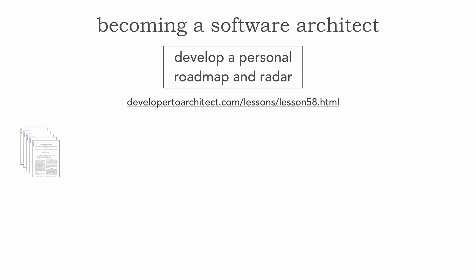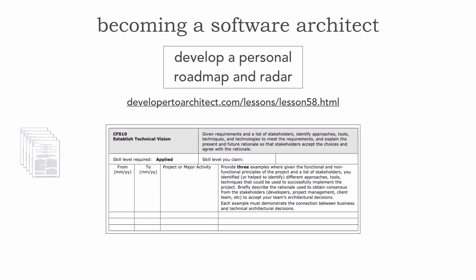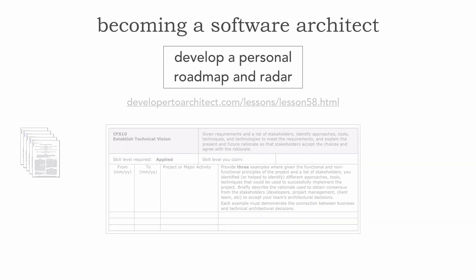I'm not necessarily recommending that you go for this certification, however I am strongly recommending that you download the nomination packet — links are within the end of this video as well as lesson 58. The idea is that filling out this nomination packet allows you to start tracking your proficiencies as an architect. This is a snapshot of what one of these core competencies looks like — for example, 'establish a technical vision' — it allows you to track the dates, the project or major activity, and briefly describe how you established that technical vision.